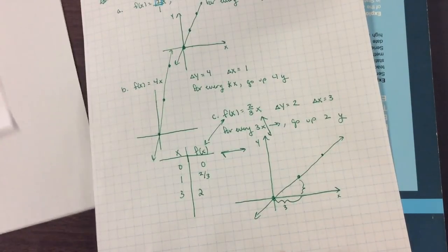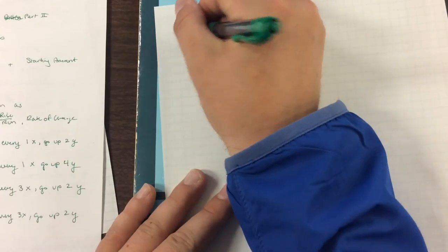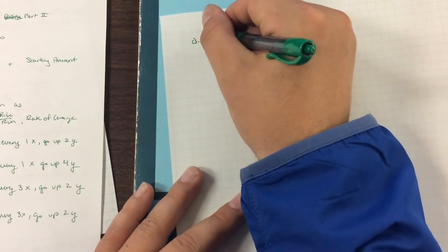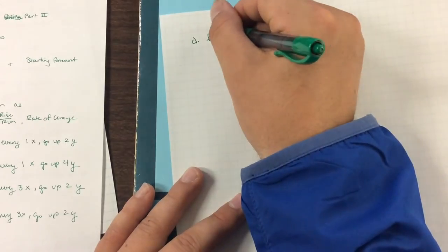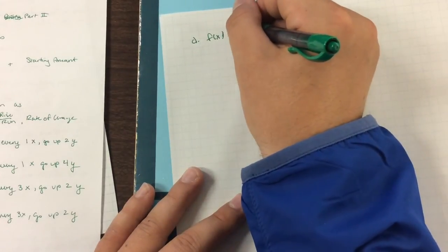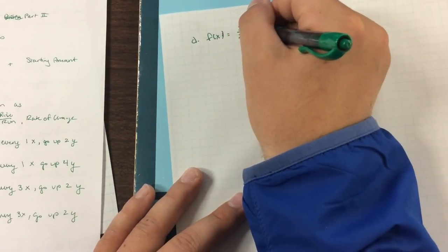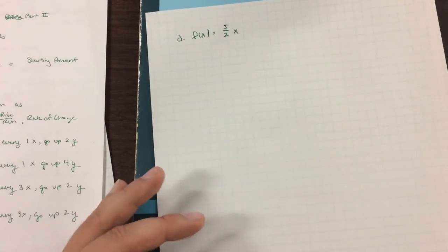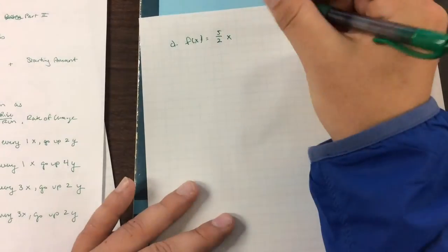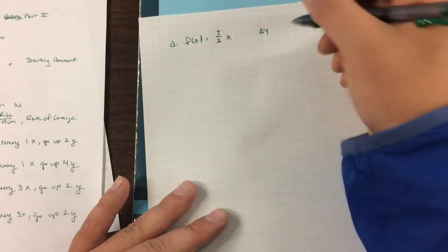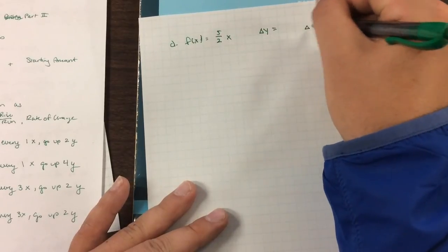Okay. Let's try one more. This is d. We're going to say f of x equals 5 halves x. And the first thing we want to ask ourselves, well, what is our change of y? And what is our change of x?